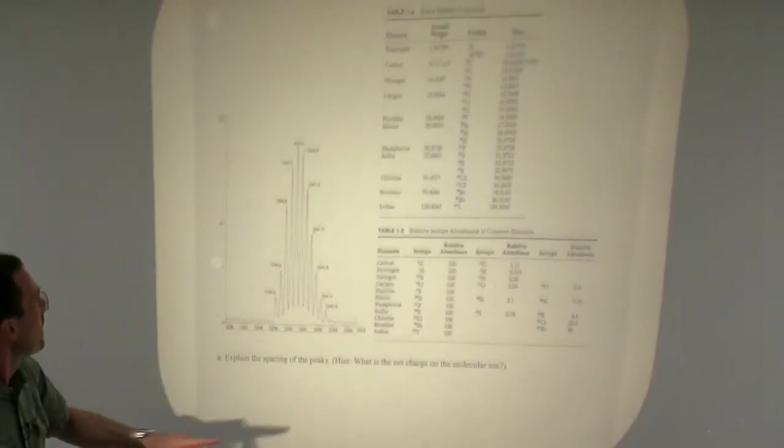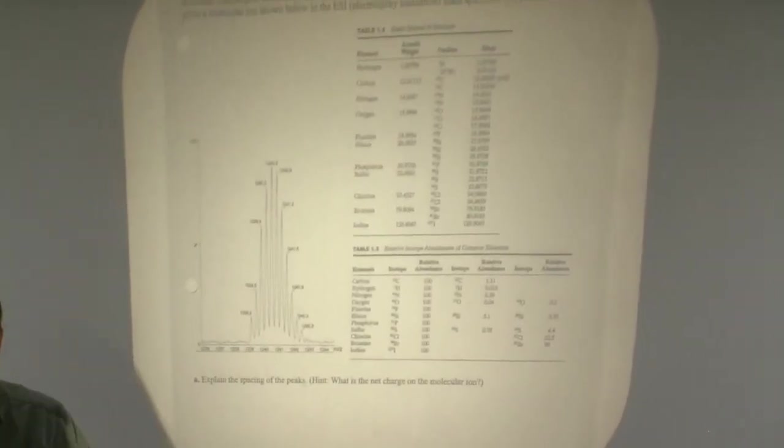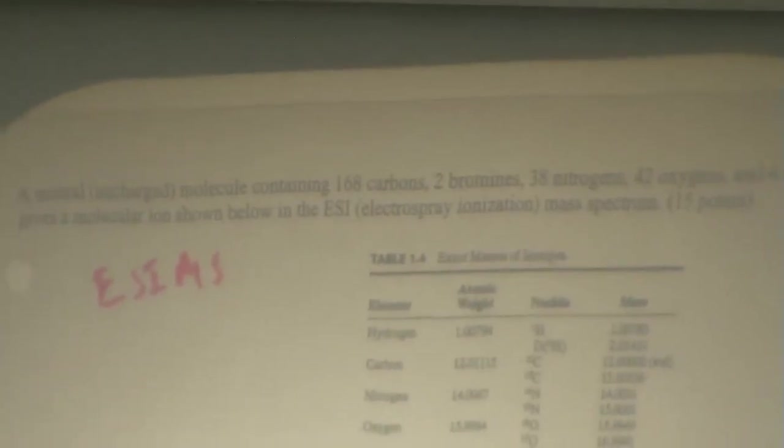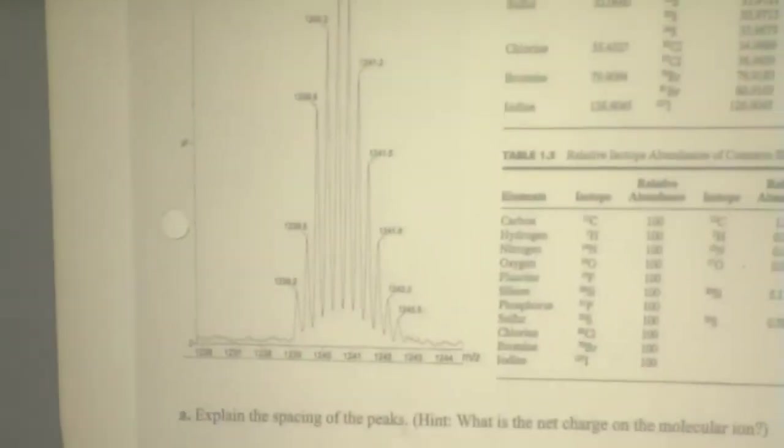Here's a mass spectrum. It's an ESI mass spec of a compound with 168 carbon hydrogen atoms, 2 bromine atoms, 38 nitrogen atoms, 42 oxygen atoms and 4 sulfur atoms. This is the sort of pattern of isotopomers that you might see.